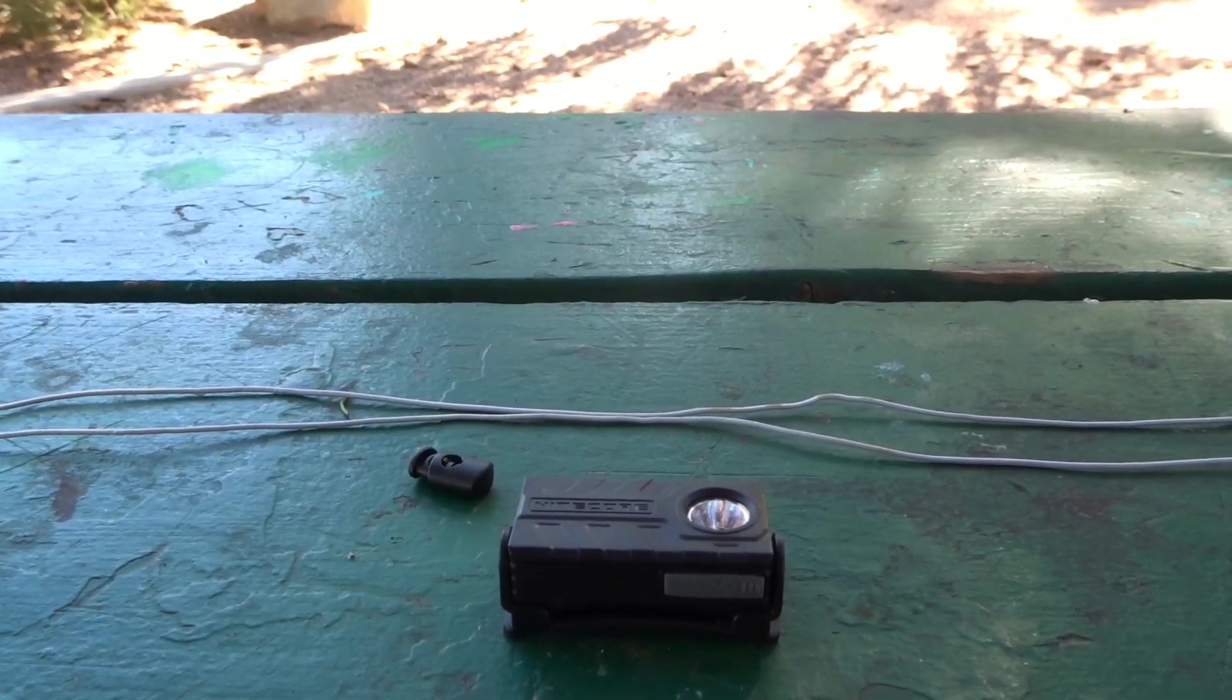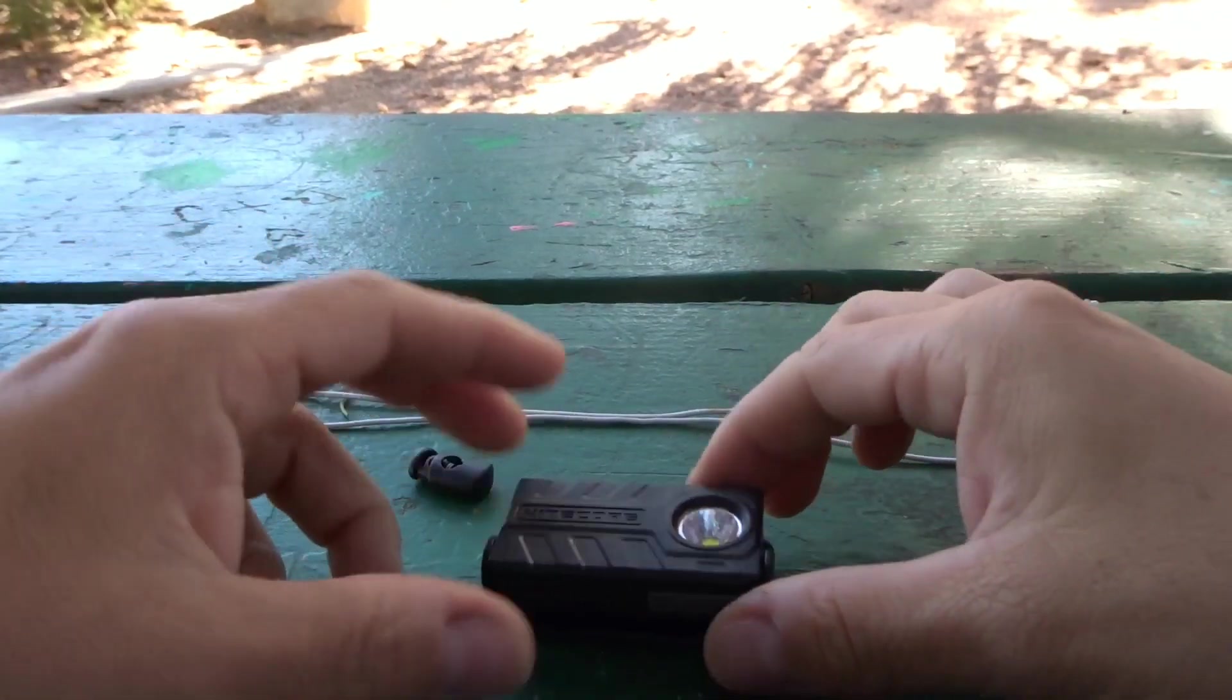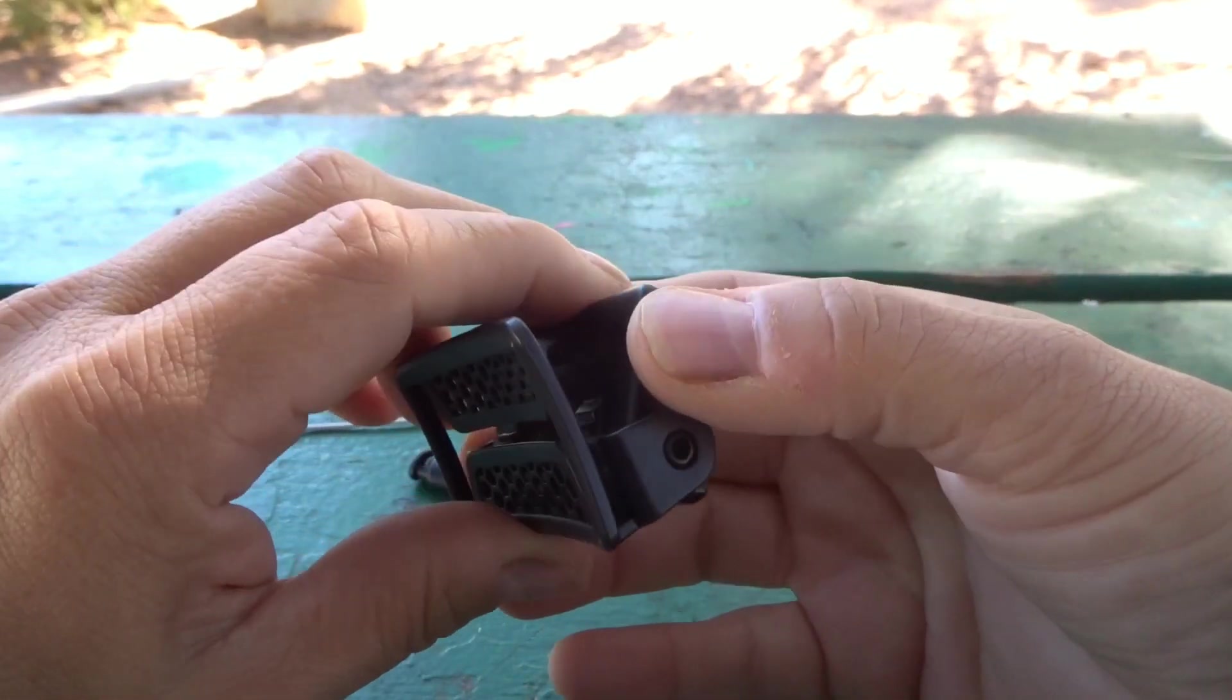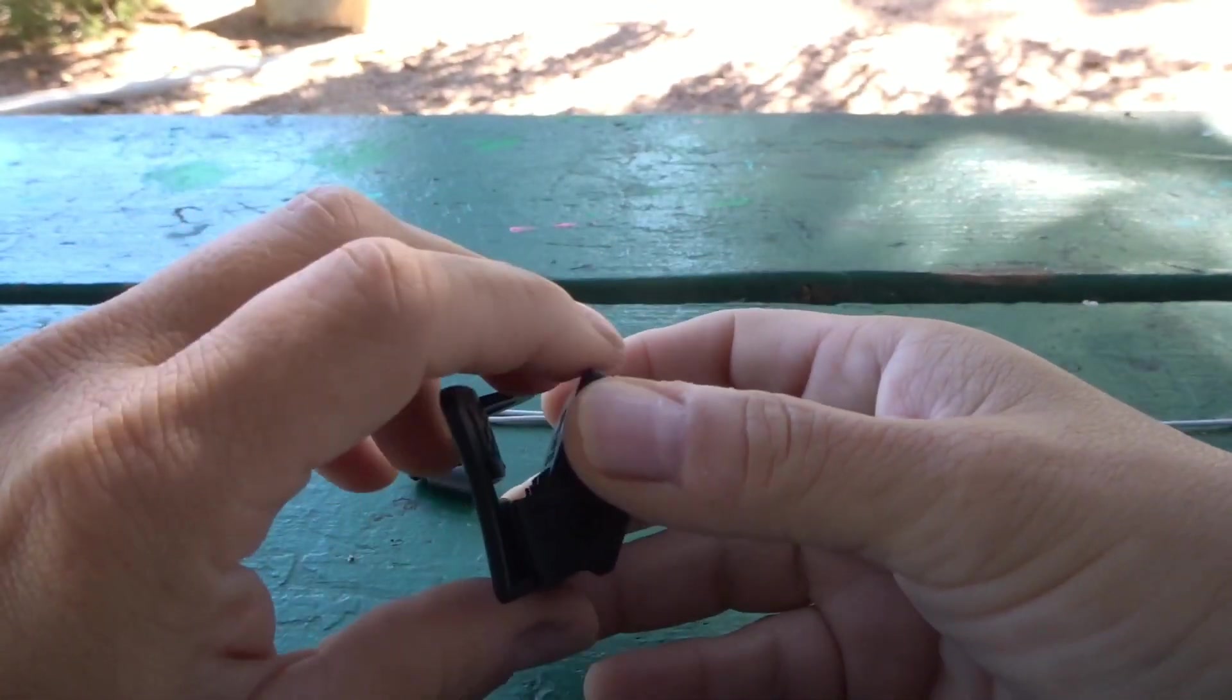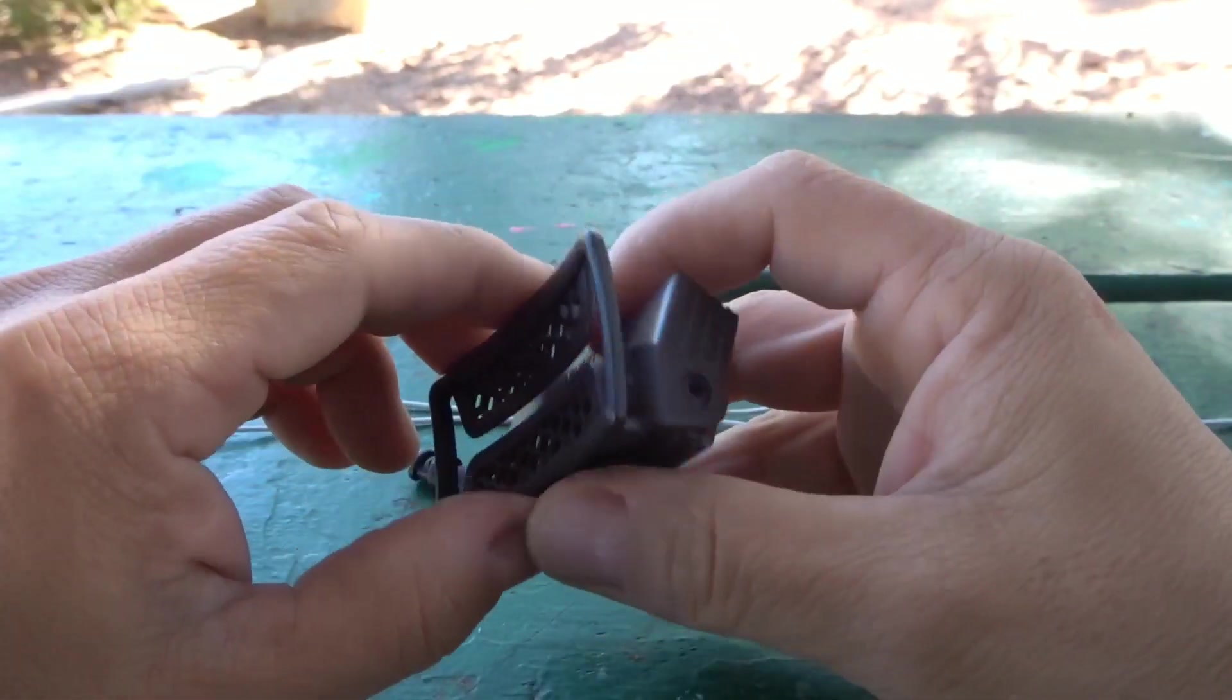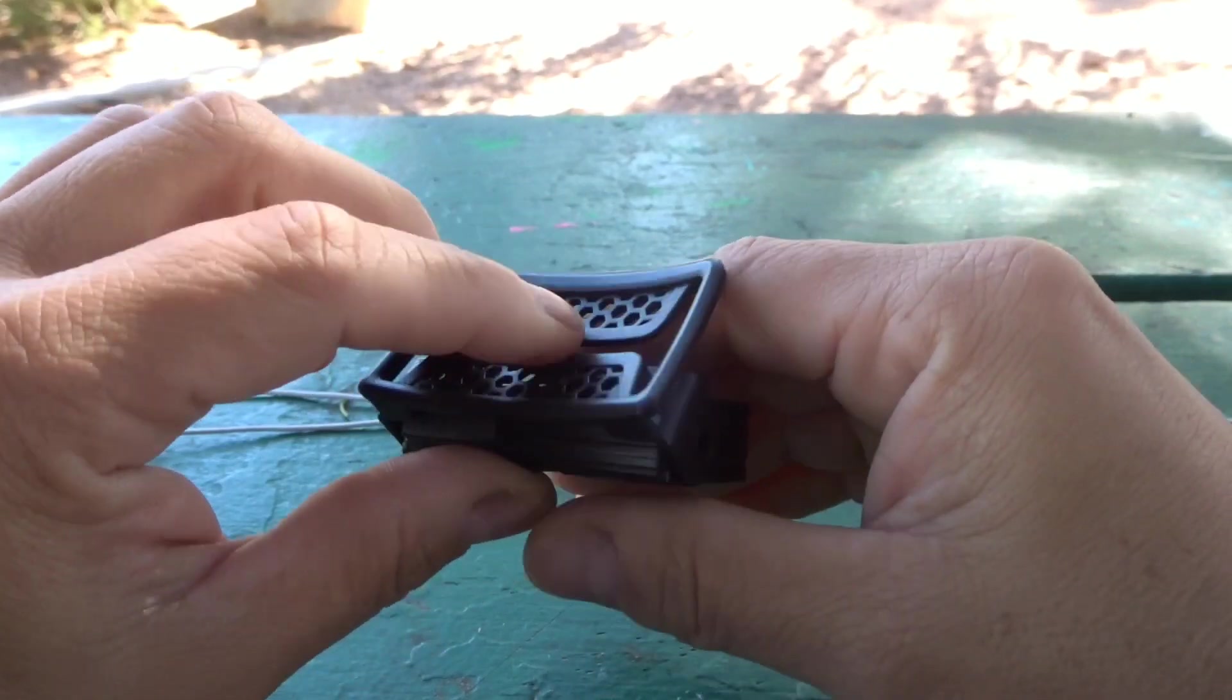So here we are. First you're going to need your Nitecore and you're going to need to remove the elastic headband. It's easy, you just remove it from this side right here.